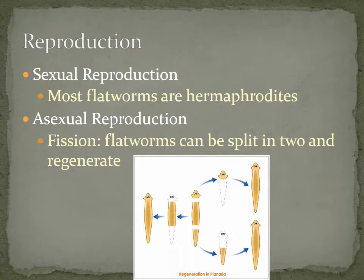When it comes to sexual reproduction, most flatworms that reproduce sexually are hermaphroditic, meaning some produce sperm and some produce eggs, but they all have the capability of doing both — though they will not self-fertilize.